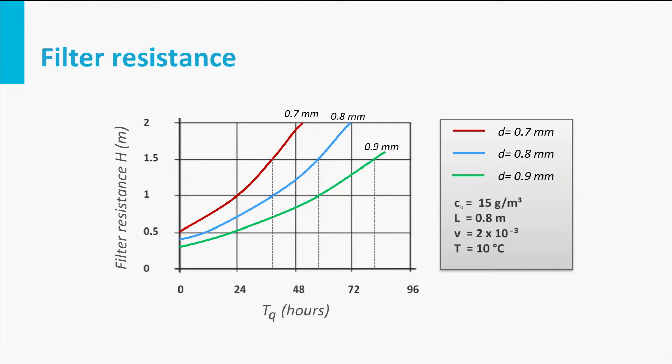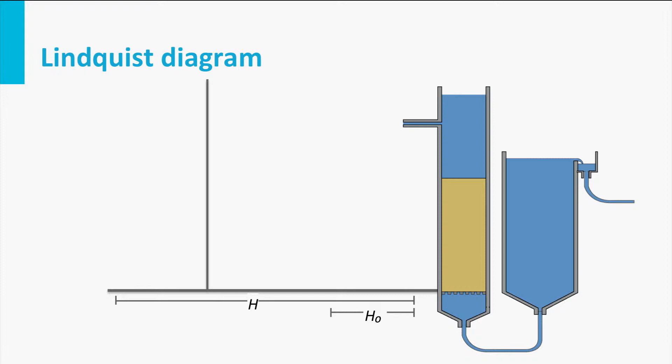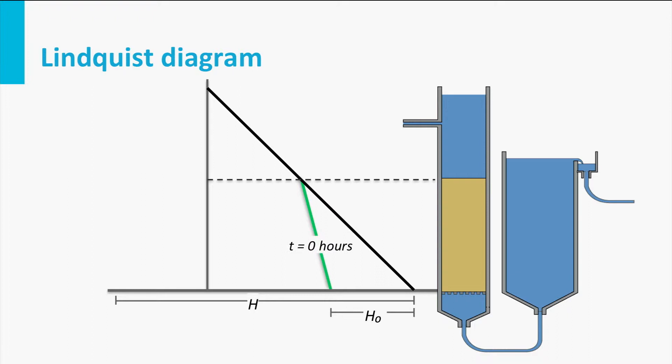The maximum allowable head loss is determined by the filter bed height and the supernatant water level, as observed in the so-called Linguist diagram. When water is not flowing, the total pressure at the bottom of the filter is equal to atmospheric pressure plus the pressure of the water column in the filter. At the start of a filter run, clean bed resistance occurs and the pressure at the bottom is slightly decreased.